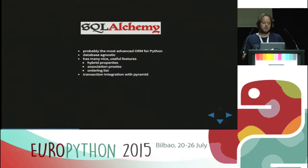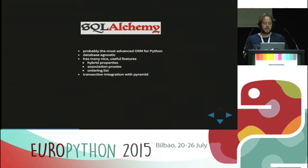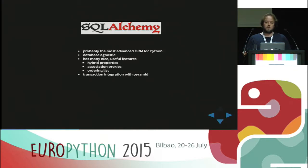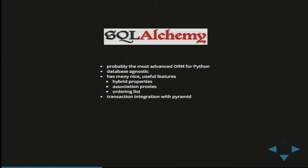SQLAlchemy is probably the most advanced Python object-relational mapper out there. It's completely database-agnostic, meaning it supports all your relational databases. It has many nice useful features that COTI makes use of, like hybrid properties, association proxies, and ordering lists. Particularly useful is that transactions can be bound to the lifecycle of a Pyramid request through the use of the pyramid_tm and zope.sqlalchemy packages.